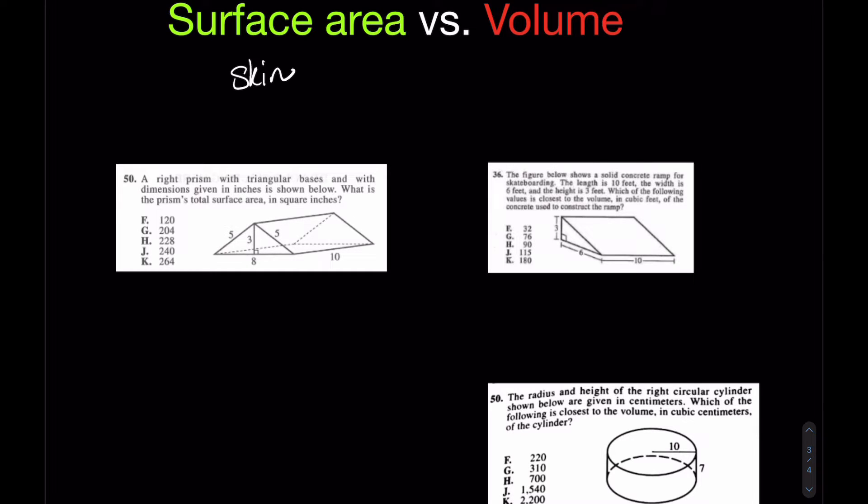Whereas the volume is the space within an object. I call it the blood and guts of the shape. It's all the stuff inside of you, all the space that you take up. Whereas surface area is your skin, that surrounding perimeter if you will.